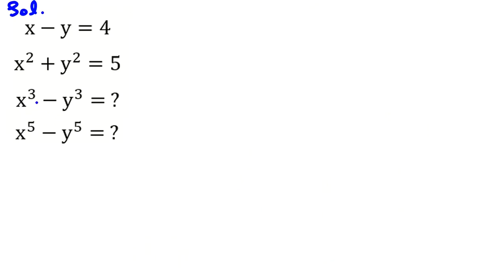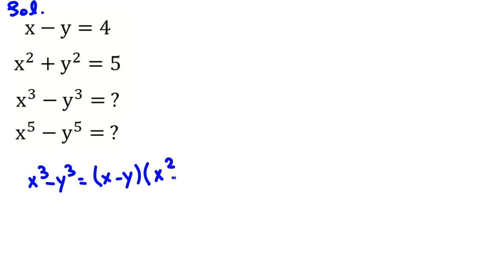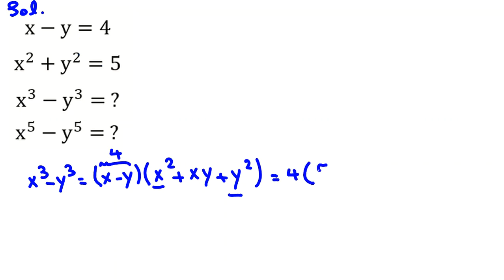Let's solve the first problem: x cubed minus y cubed. From the identity, x cubed minus y cubed equals (x minus y)(x squared plus xy plus y squared). We know x minus y equals 4, and x squared plus y squared equals 5, so this becomes 4 times (5 plus xy).